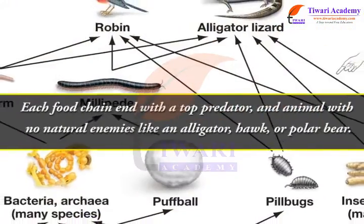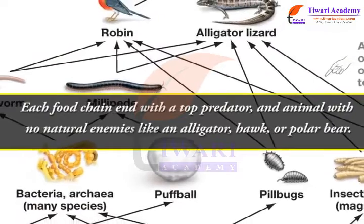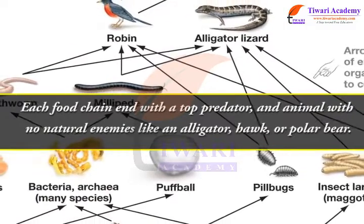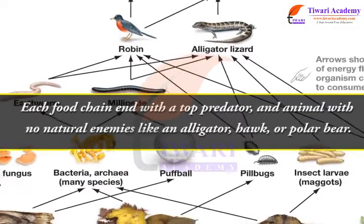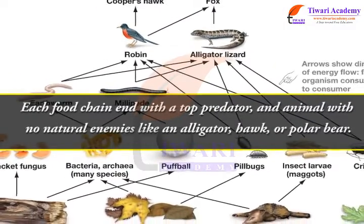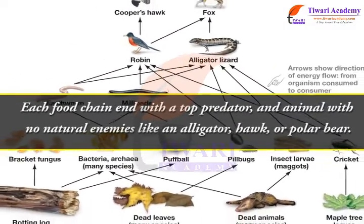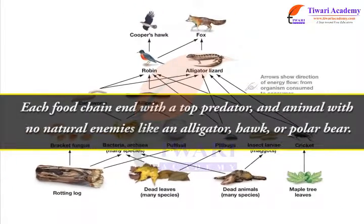Each food chain ends with a top predator — an animal with no natural enemies, like an alligator, hawk, or polar bear.